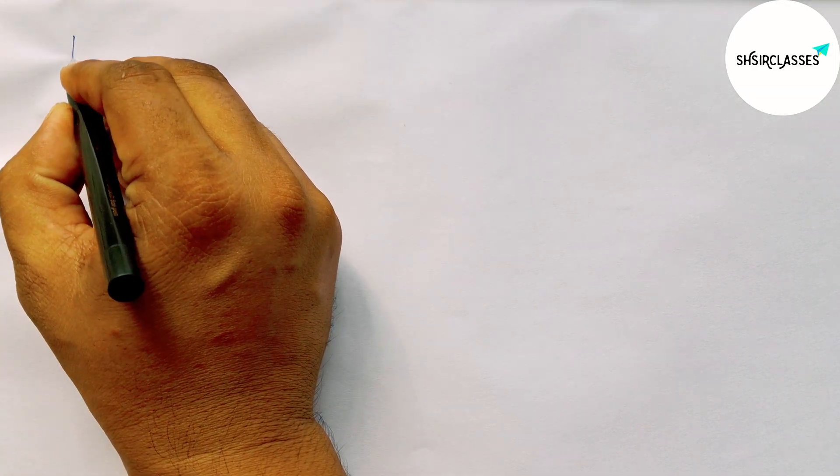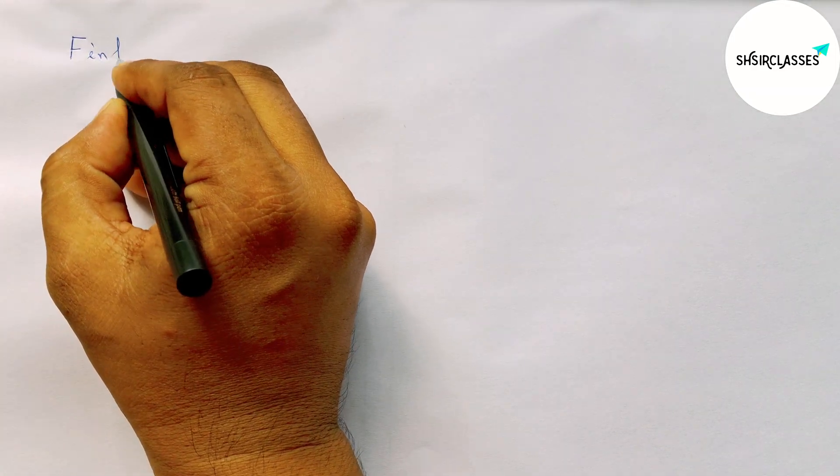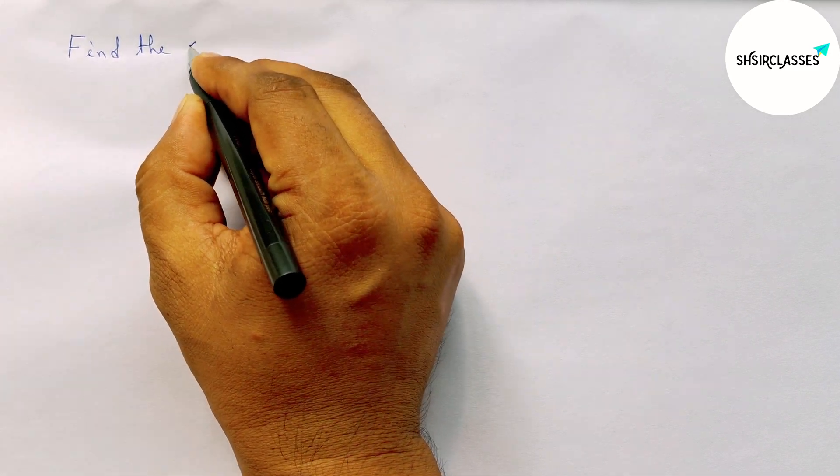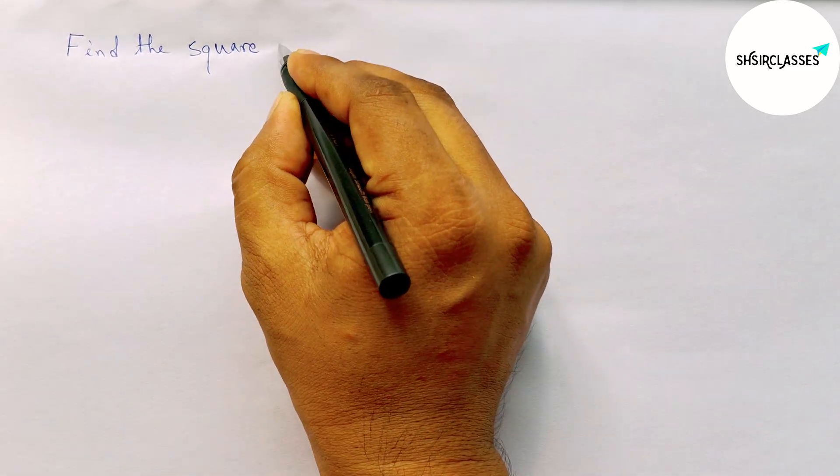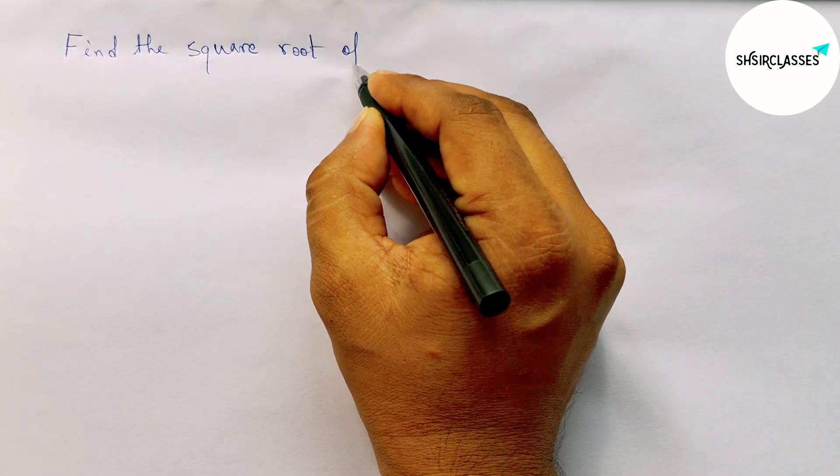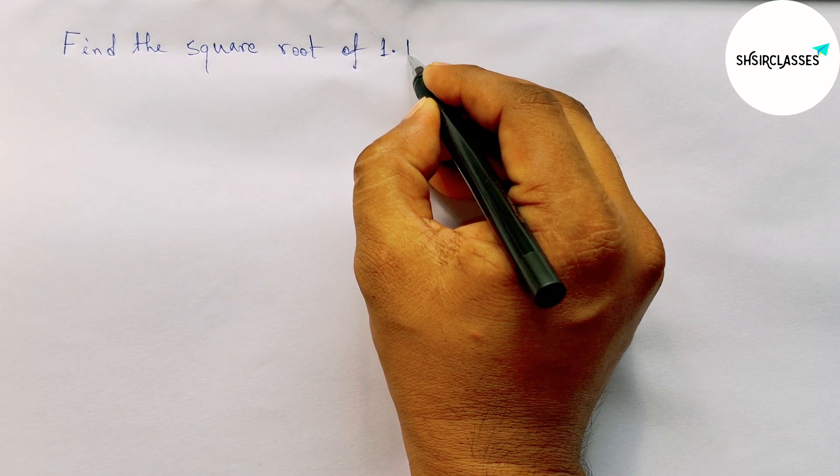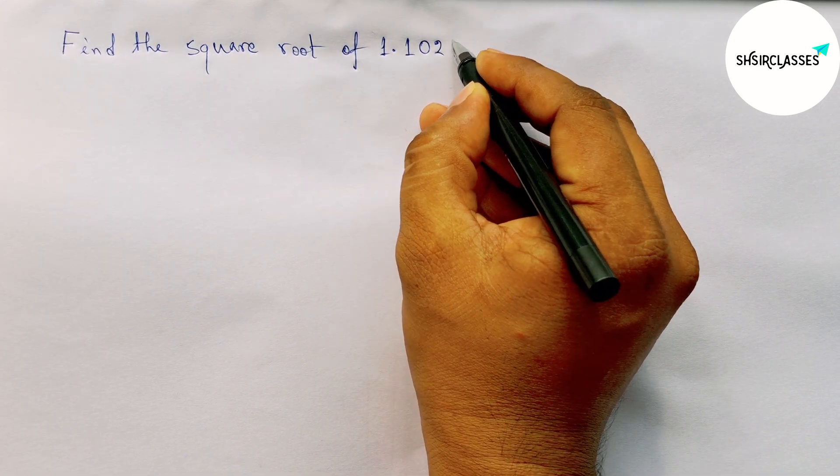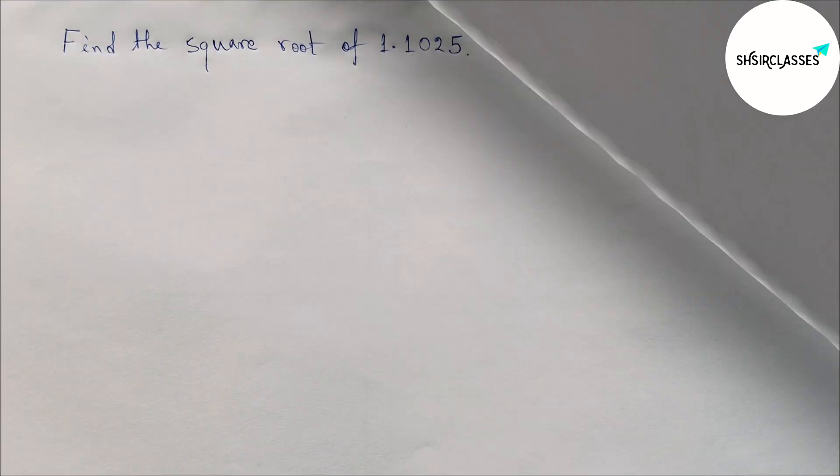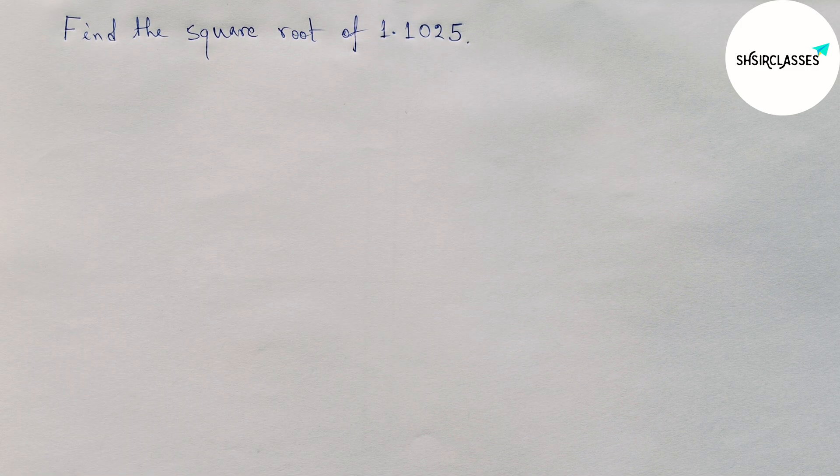Hi everyone, welcome to essay share classes. Today in this video, find the square root of 1.1025 in easy way. Please watch the video till the end. So let's start the video. First of all, write down here the given decimal number.